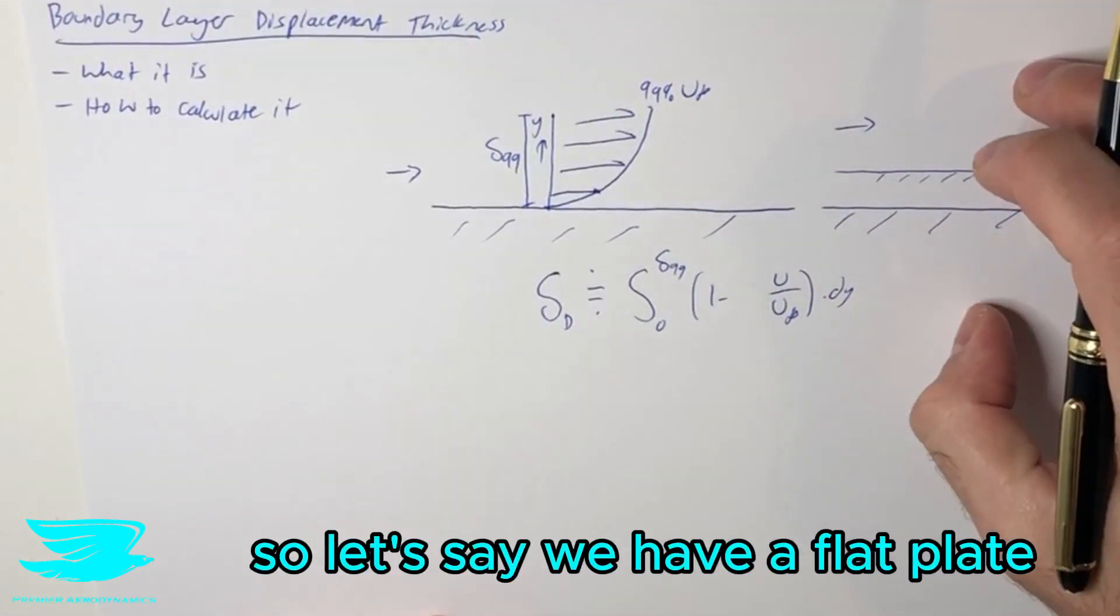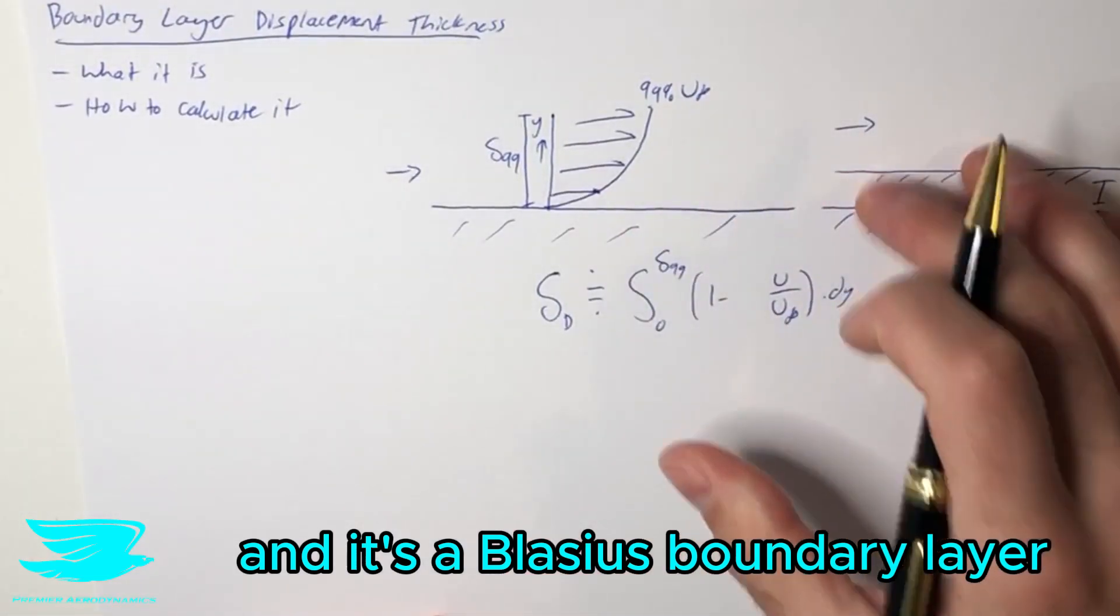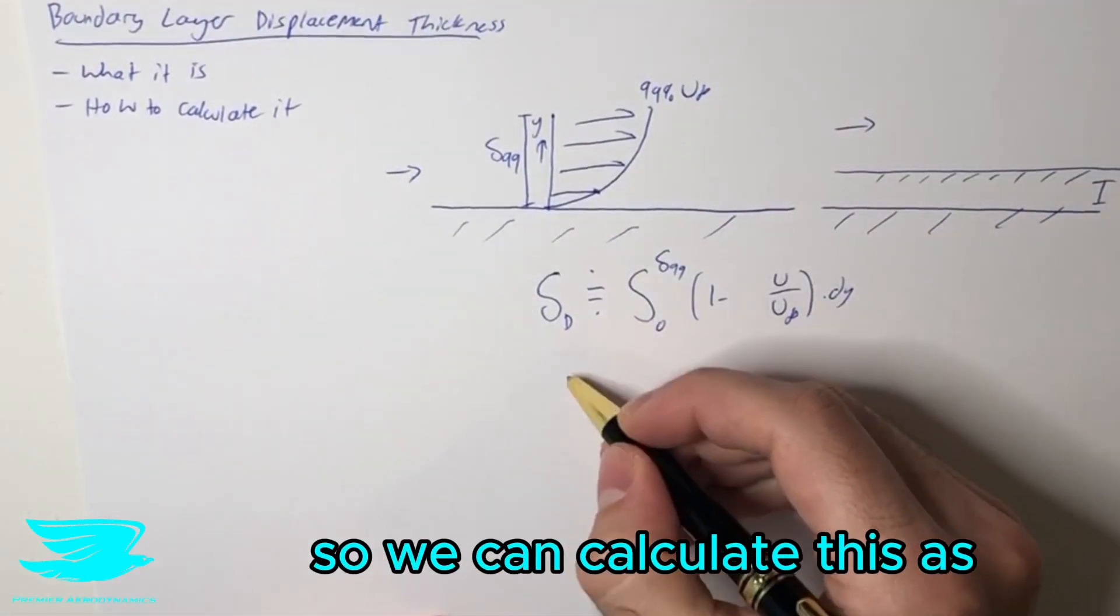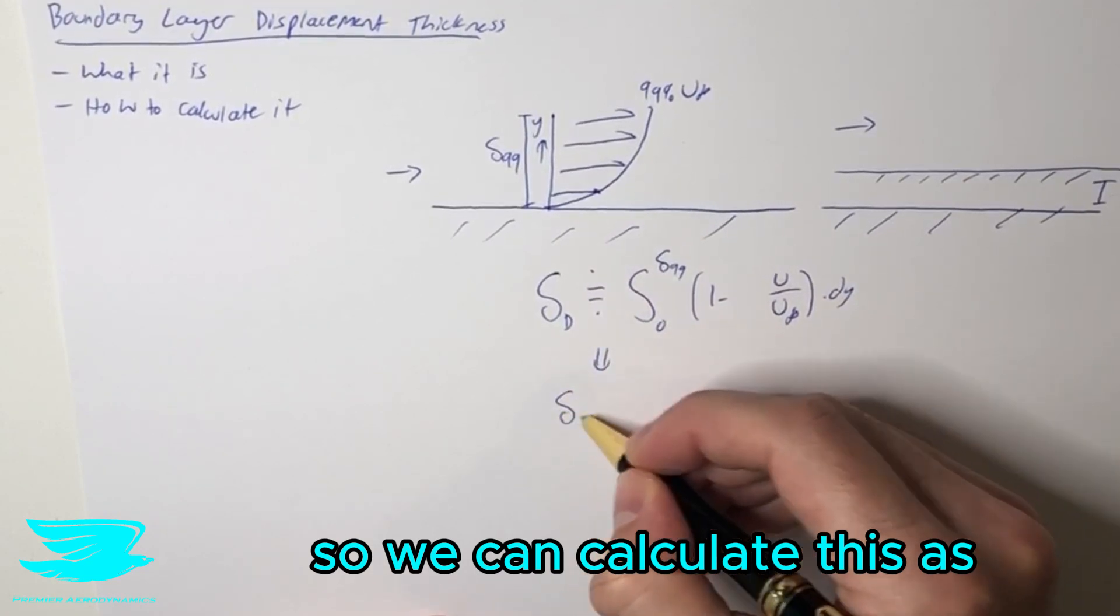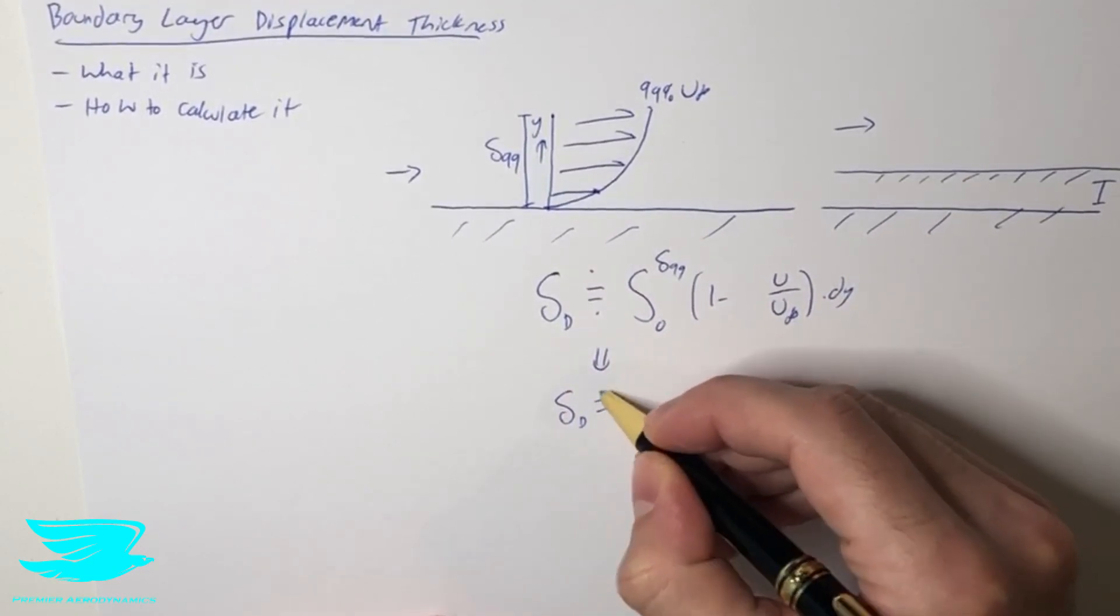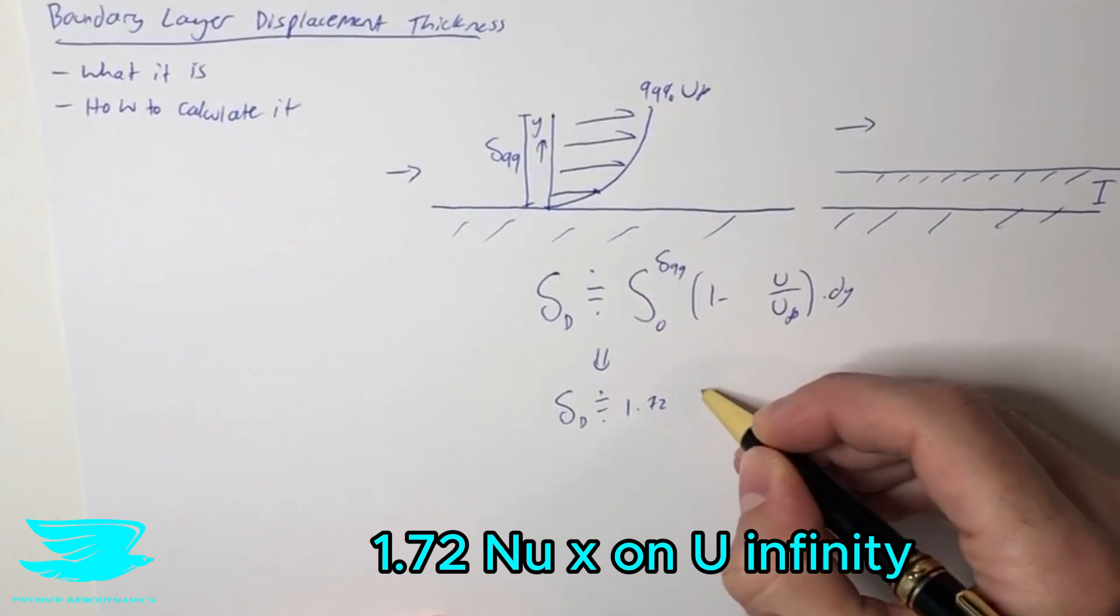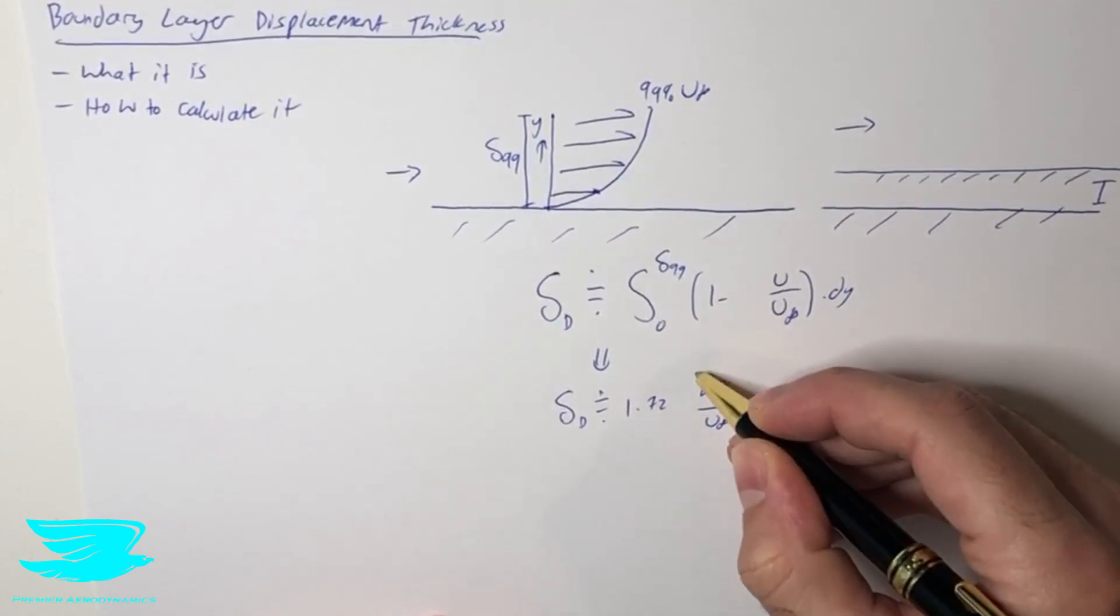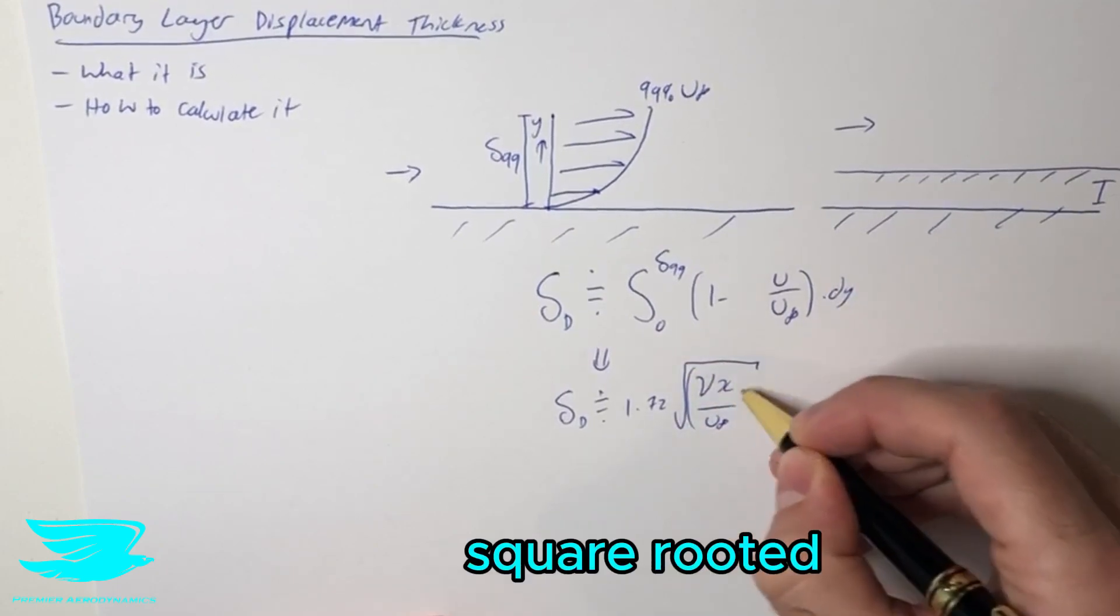So let's say we have a flat plate and it's a Blasius boundary layer, which we'll cover in the coming weeks. So we can calculate this, or simplified effectively, as 1.72 times the square root of nu x over U infinity.